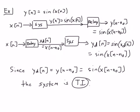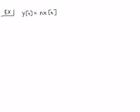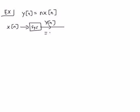Let's look at another example to cement this idea. We'll consider the system y(n) = n·x(n), where the system takes the input x(n) and multiplies it by n. If we take x(n) and run it through the system first, we get y(n) = n·x(n).